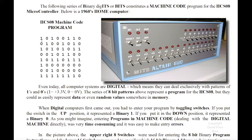What you would do is, for each instruction, if this was a 1, you would flip this switch up. If this was a 0, you'd flip this switch here down, and so on until you had all 8 switches set to the binary pattern that you've got here. Once you put that in, then you'd hit the Deposit button, and then you'd enter the next series of binary codes, and so forth, until the entire program was entered.